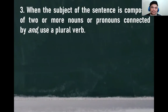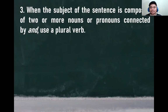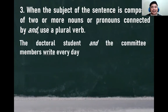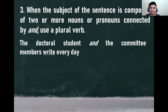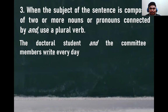Let's have the third rule. When the subject of the sentence is composed of two or more nouns connected by 'and,' use a plural verb. To explain it further, here's an example: 'The doctoral student and the committee members write every day.' There are two subjects here — the doctoral student and the committee members — connected by the conjunction 'and.' These two subjects are considered plural, therefore the base form of the verb 'write' is required. That's correct.